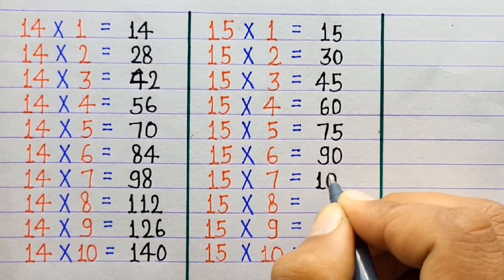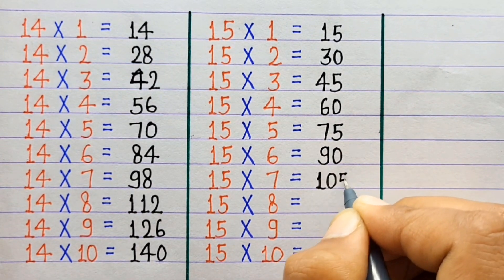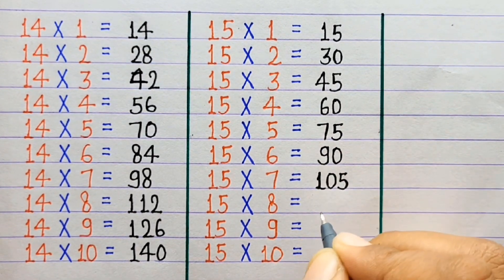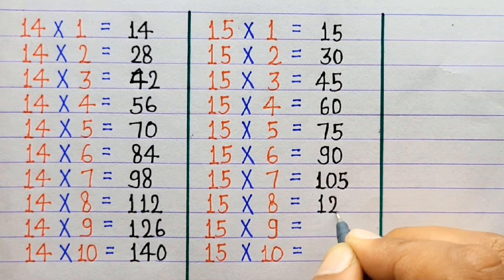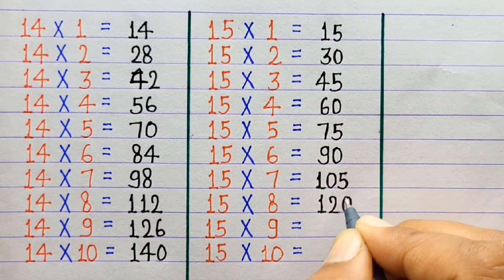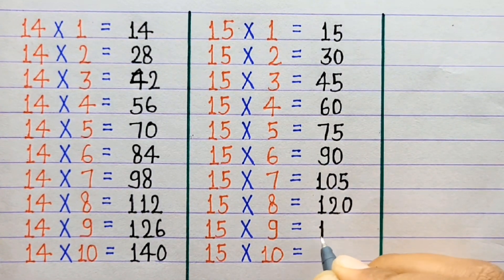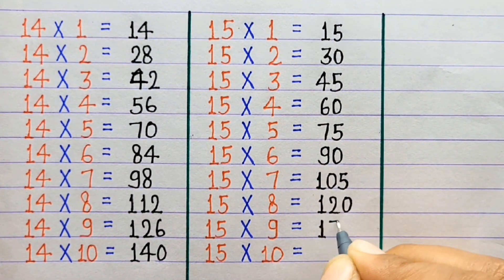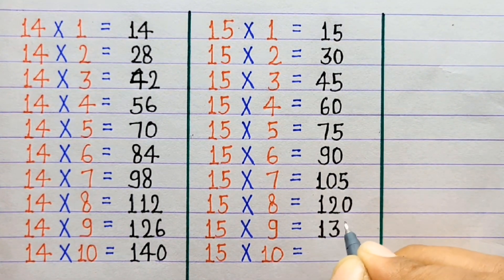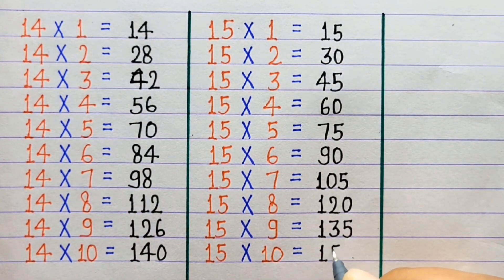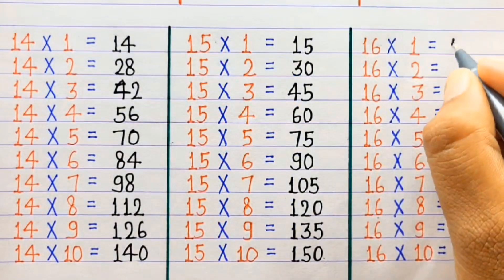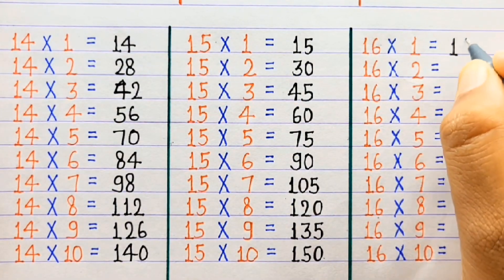15×7=105, 15×8=120, 15×9=135, 15×10=150.